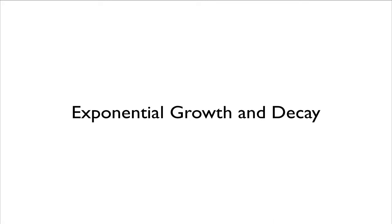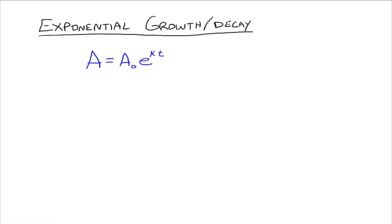In this video, I'd like to talk about exponential growth and decay. To begin, our formula for exponential growth and decay looks like this. Read this as A equals A sub zero — also referred to as A naught. Times E to the KT. This E is the 2.71828... that goes on forever, the irrational number we talked about before.